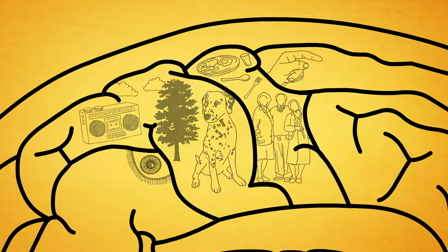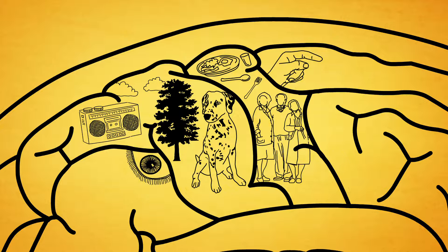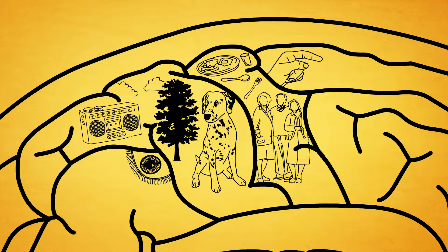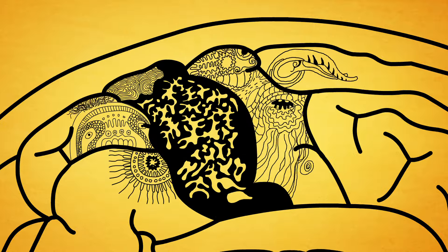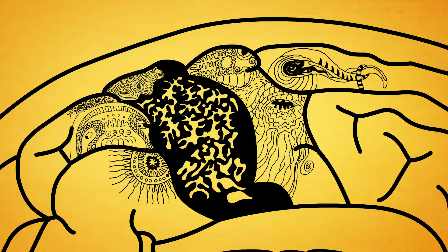After that, the disease moves to where the brain makes sense of things it sees, hears, and smells. In this stage, Alzheimer's wreaks havoc on a person's senses and can spark hallucinations.